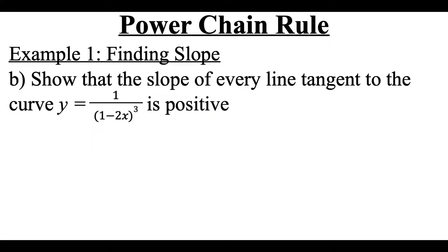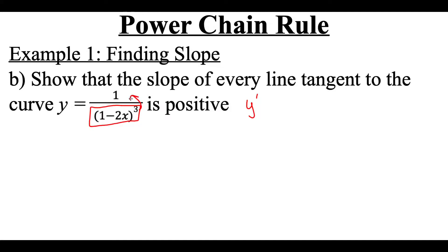In this example, we're going to show that the slope of every line tangent to the curve y equals 1 over (1 minus 2x) to the third power is positive. Before we get started, if we leave this in fraction form, we would have to do the quotient rule to find its derivative. So instead, I'm going to take the denominator and swing it up to the top of the fraction, making the power negative. So this becomes (1 minus 2x) raised to the negative third power, which is a lot easier to differentiate.